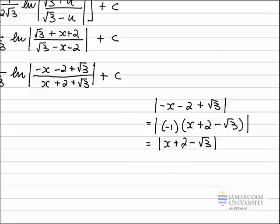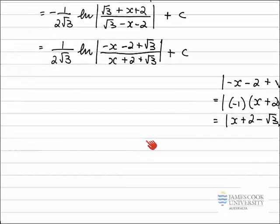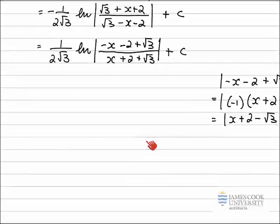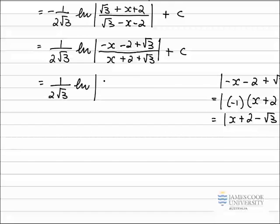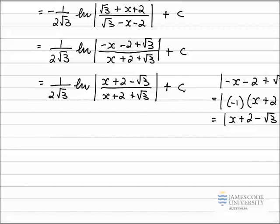So substituting that back into my integral gives a slightly neater-looking answer: 1 over 2 root 3 times the log of x plus 2 minus root 3, all divided by x plus 2 plus root 3, modulus of all of that, plus an arbitrary constant.